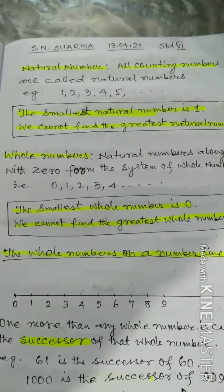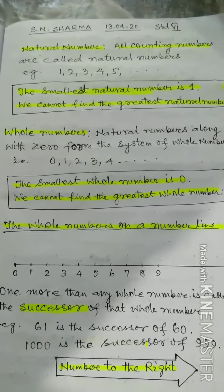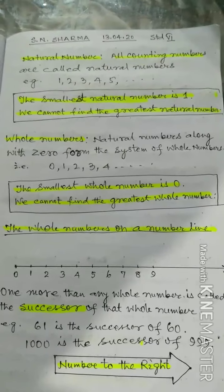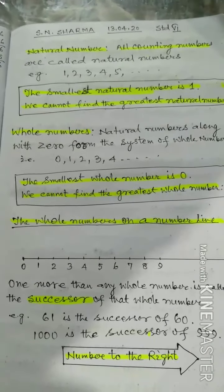All counting numbers are called natural numbers. For example, 1, 2, 3, 4, 5, and so on. The smallest natural number is 1.